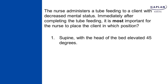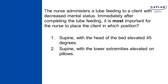Number one: supine with the head of the bed elevated 45 degrees. The patient is lying on their back with the head elevated — that addresses preventing aspiration, so it's okay. Number two: supine with the lower extremities elevated on pillows — the client is lying flat with legs raised. That puts pressure on the abdominal organs and sets the client up for aspiration. Not a good answer choice; eliminate it.